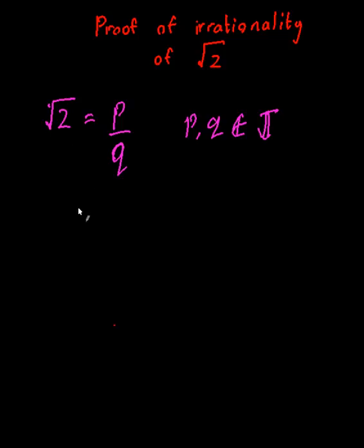Now just manipulating what I have over there, I can say that 2 is equal to P squared on Q squared, which means that 2Q squared is equal to P squared.